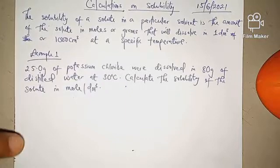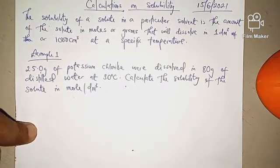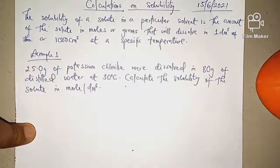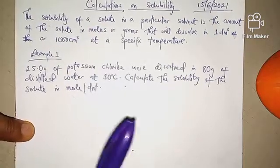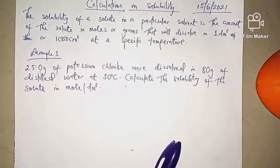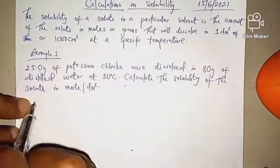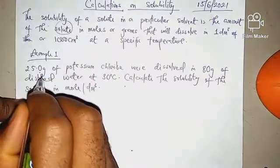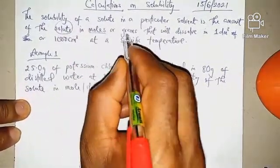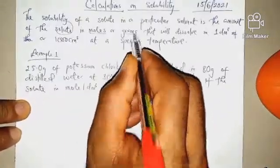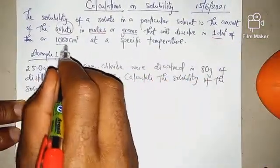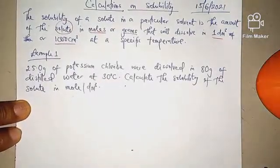Let's just look at definitions as we are seeing on our screen. Solubility of a solute in a particular solvent is the amount of solute in moles or grams that will dissolve in 1 dm³ or 1000 cm³ at a particular temperature. The emphasis here is that solubility is the amount of solutes — either in grams or in moles — that will dissolve in 1 dm³ at a particular temperature.